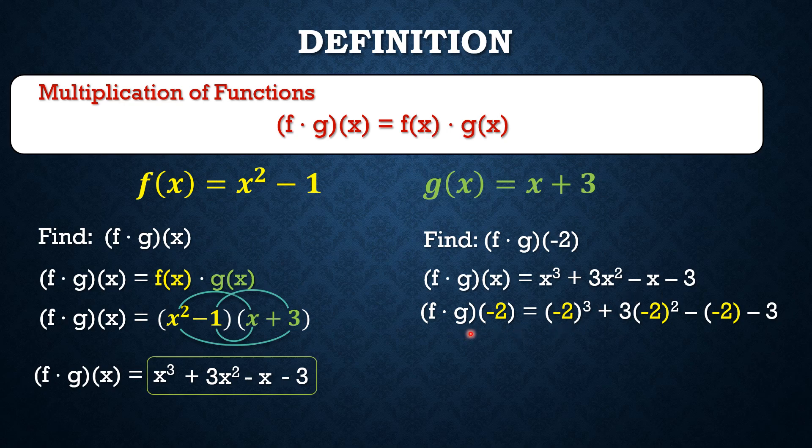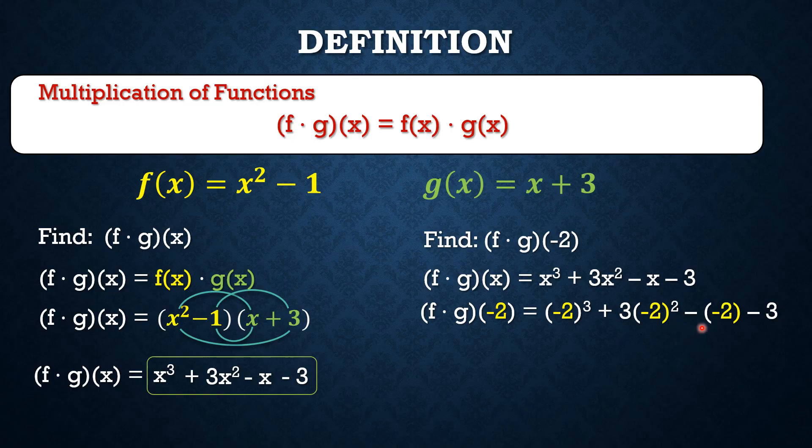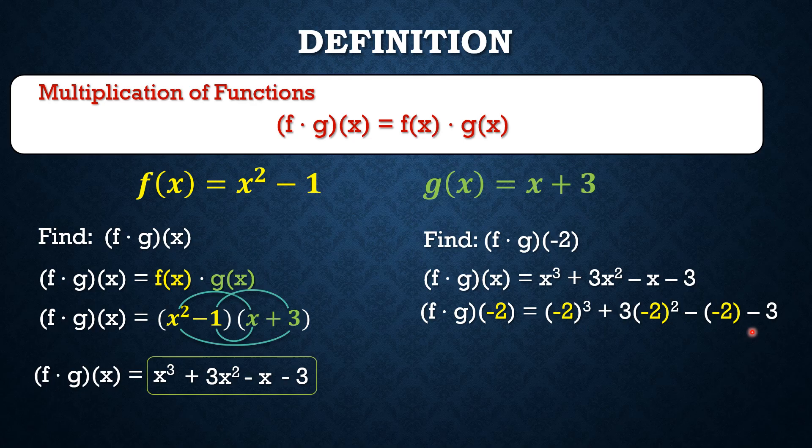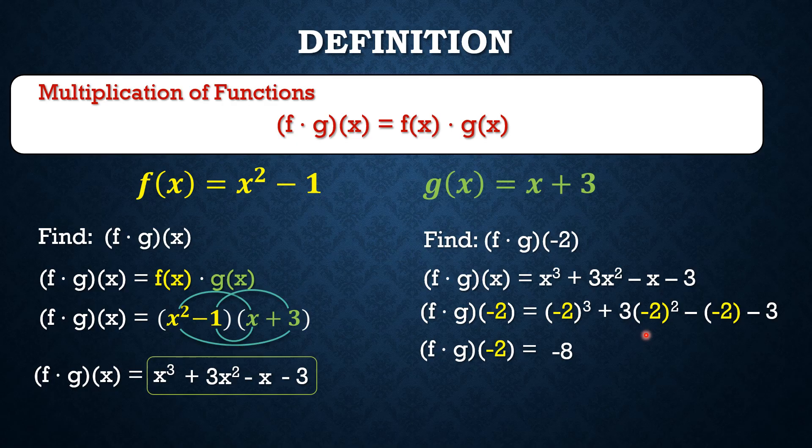We'll just replace all the x's we have here with negative 2. And so, we have (f · g)(-2) = (-2)³ + 3(-2)² - (-2) - 3. Let's simplify. Negative 2 cubed means (-2) × (-2) × (-2) and that gives us negative 8.